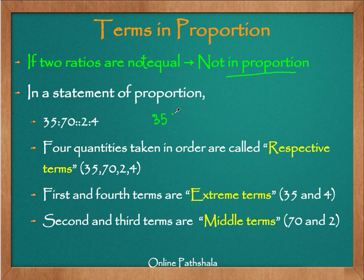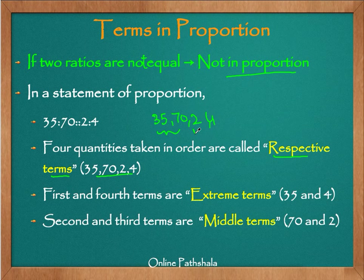The four quantities 35, 70, 2, and 4, taken in order, are called the respective terms. This order is important — it is the convention we use. The first two quantities form the first ratio and the next two form the second ratio. That is the way we specify a proportion.